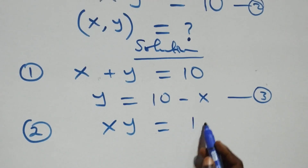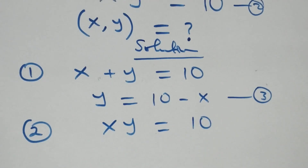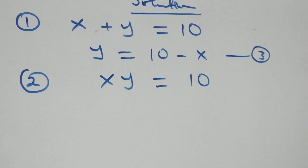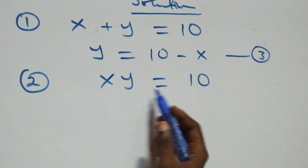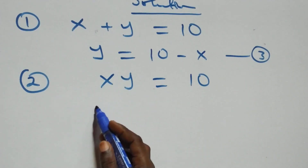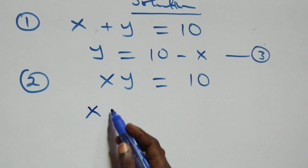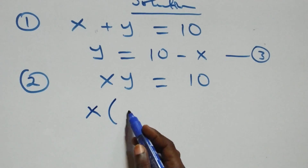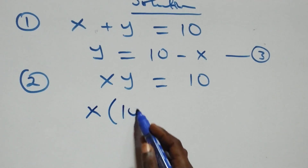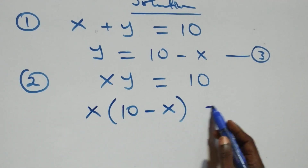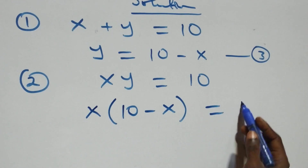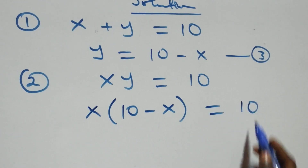Also from equation two, which is x times y equals to ten, we substitute equation three here. That is, this becomes x times the quantity ten minus x, then equals to ten.